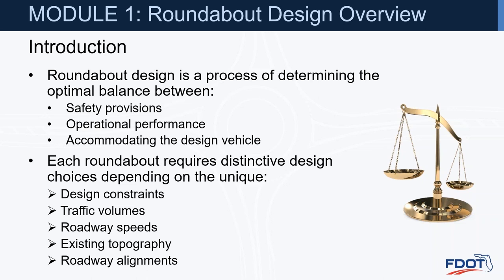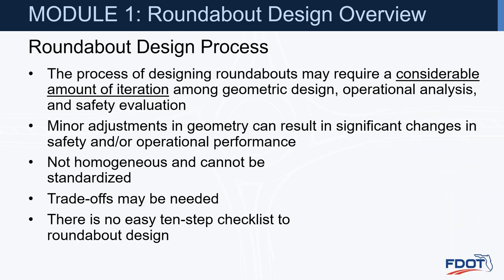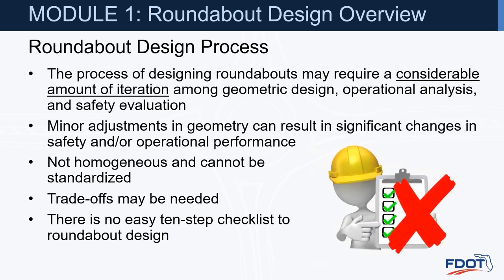Each roundabout requires distinctive design choices depending on the unique design constraints, traffic volumes, roadway speeds, existing topography, and roadway alignments. The process of designing roundabouts may require a considerable amount of iteration among geometric design, operational analysis, and safety evaluation. Minor adjustments in geometry can result in significant changes in safety and/or operational performance. Roundabouts are not homogeneous and cannot be standardized. Trade-offs in the design may be needed, and unfortunately there is no easy 10-step checklist to roundabout design.